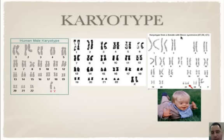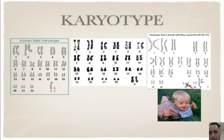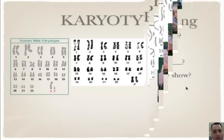Looking at another karyotype, everything looks fine — they're all paired — except for chromosome 21. When you have three copies of chromosome 21, that's called Down syndrome or trisomy 21, which can lead to a lot of defects in child development.